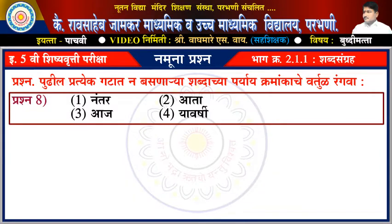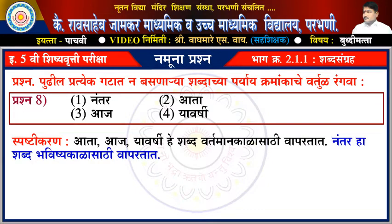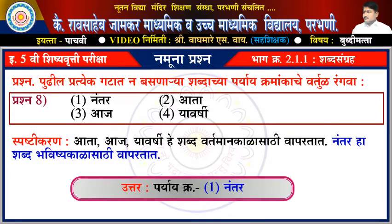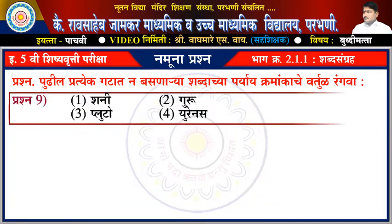પ્રશ્ન આઠવા: એક નંતર, 2 આતા, 3 આજ, 4 યાavR્શી. સ્પષ્ટિકરણ: આતા, આજ, yal yavR્શी - હે શબ્દ વર્તમાન કાળ સathe વાपरतात. તર 'નntR' - હા શब्द ભविष्य काळ साथी वापरतात. ઉત્તર: પર્યAE ક્rrmaANG ek - natR.